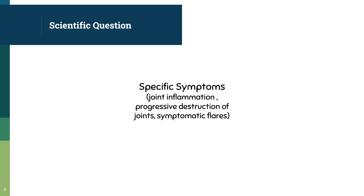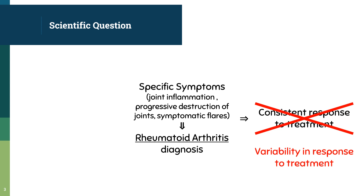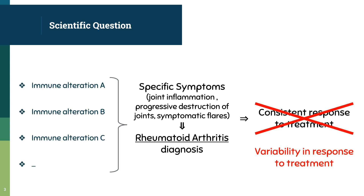Specific symptoms characterize RA, such as joint inflammation, progressive destruction of joints and articulation, or symptomatic flares. Those symptoms will lead to a diagnosis of rheumatoid arthritis. Over several patients diagnosed with RA, we would expect consistency in response to treatment. However, we observe a variability in response to treatment — several patients not responding to the same treatment, or even some patients not responding to any available treatment. This led us to predict that this difference is due to a plurality of immune alterations causing distinct immune cell expression profiles, namely the RA endophenotypes.